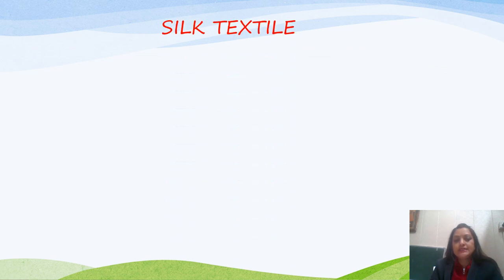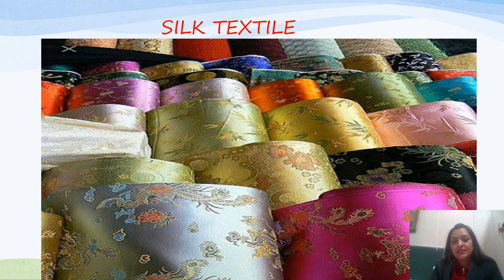The next agro-based industry is silk textile. Silk textile takes silk as a raw material and silk textiles are mostly located in Bengaluru, Mysuru, Kanchipuram, Coimbatore, Surat, Murshidabad, Varanasi, and Bhagalpur. As we can see in the picture, this is silk material or silk cloth, and these silk textiles are located in these places because most of the silk is produced in these cities.